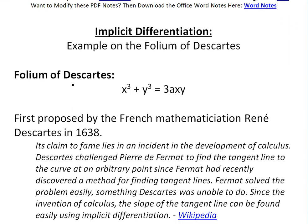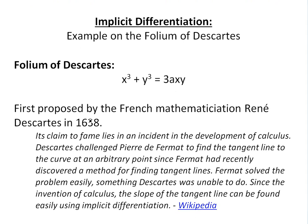Basically, the folium of Descartes, or the equation that he proposes, is x cubed plus y cubed equals 3ax, where a is just a constant, and it was first proposed by the French mathematician René Descartes in 1638.